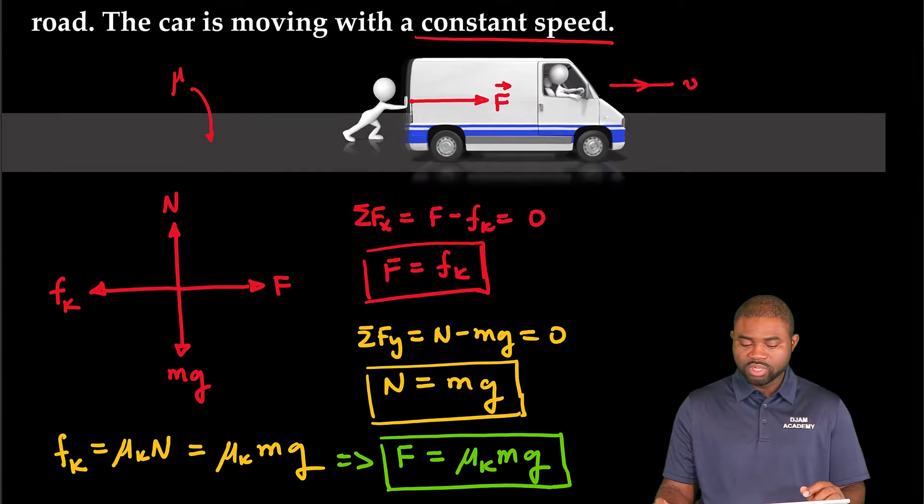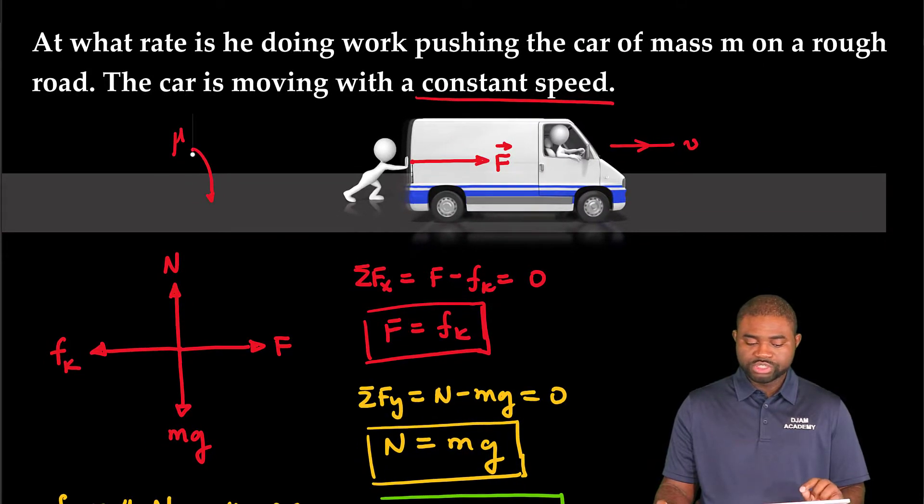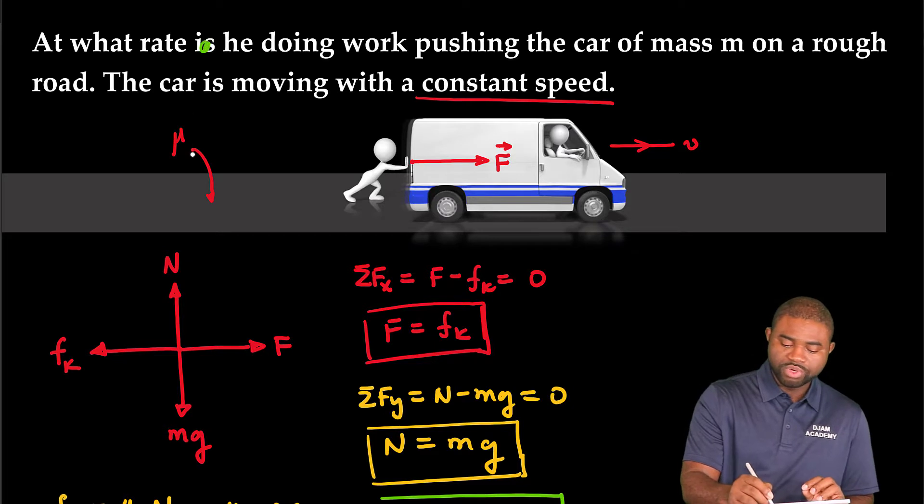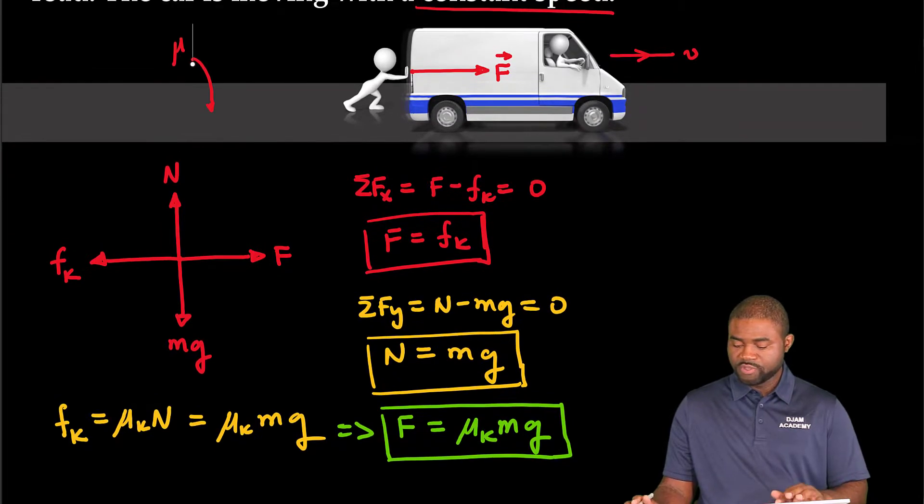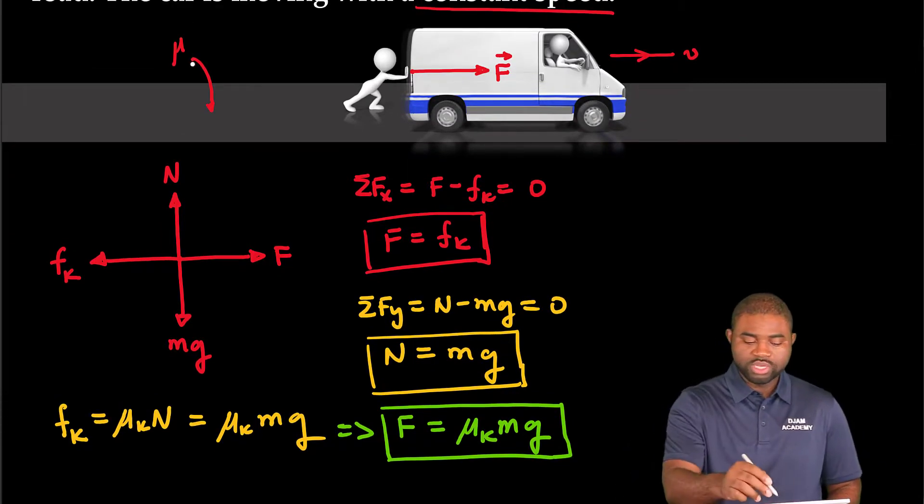So we have been asked to calculate the rate at which he is doing work pushing the car of mass m on a rough road at a constant speed. So the rate of doing work we call that power.